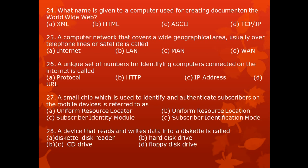Question 27. A small chip which is used to identify and authenticate subscribers on a mobile device is referred to as: A. Uniform Resource Locator, B. Uniform Resource Location, C. Subscriber Identity Module, D. Subscriber Identification Mode.